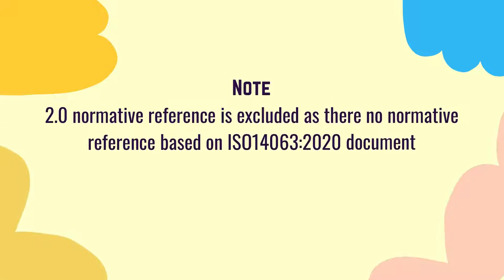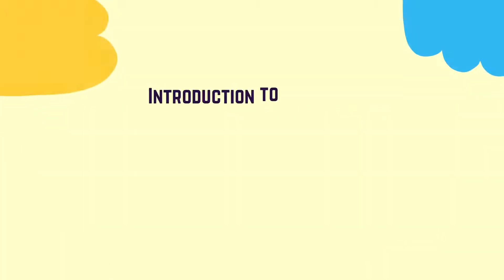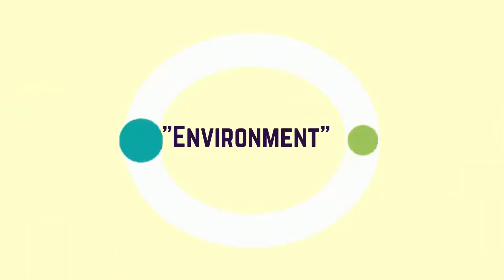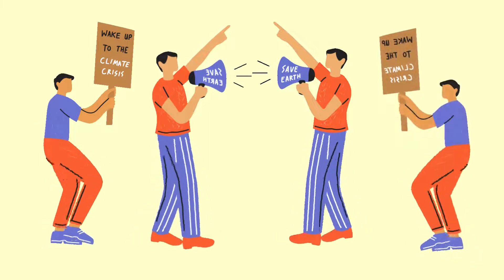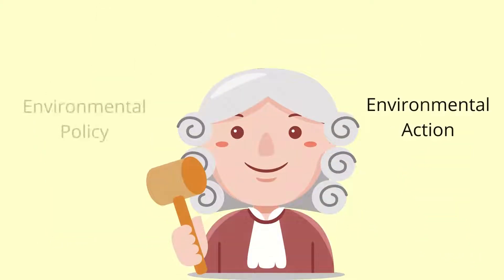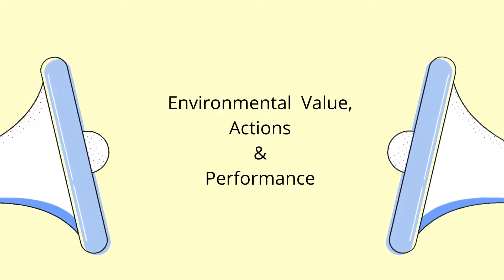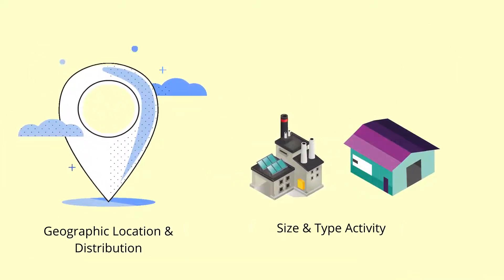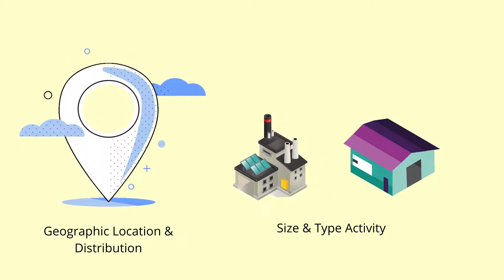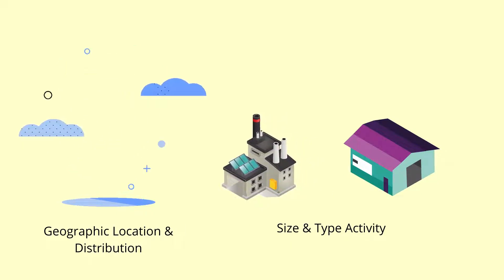With the rise of climate change in international talks and social media, the word 'environment' has become a public concern and interest, which has influenced institutional policy and actions on the environment. Due to that, organizations have the need to communicate their environmental values, actions, and performance. Factors such as an organization's geographic location, distribution, size, and types of activities influence the information that needs to be communicated.